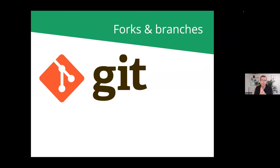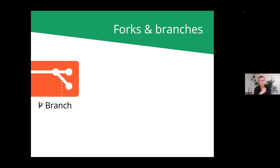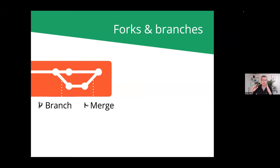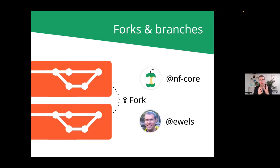Git is source version control software — basically when you're writing code, you can keep control of the history of the files you're working on and collaborate with others. With Git you have a repository which is your project, and each time you do some work you make a commit — a bundle of work. Each commit is like a point in time in the history. You can also branch at any point, going off to work on two different things side by side, and then merge those branches back together.